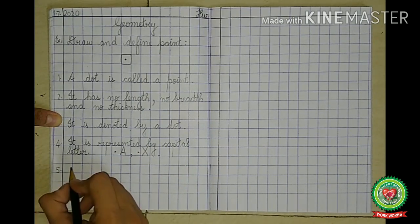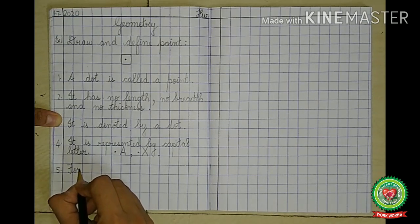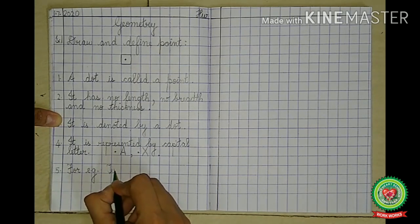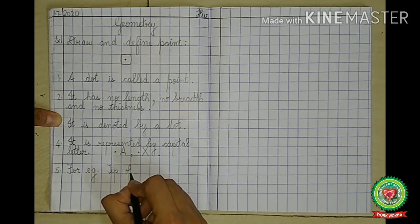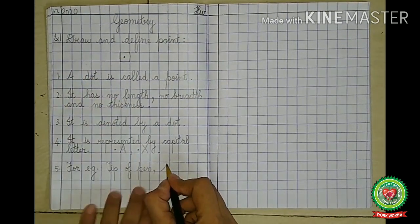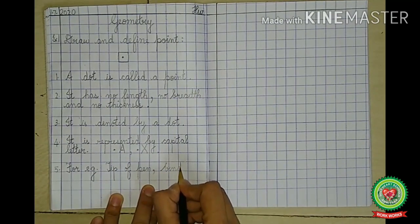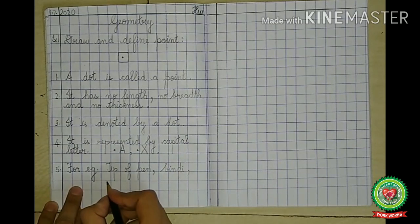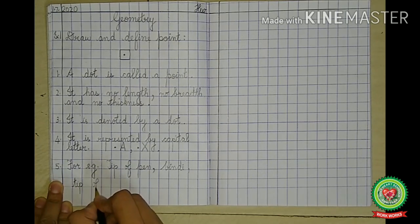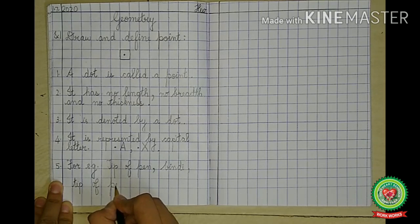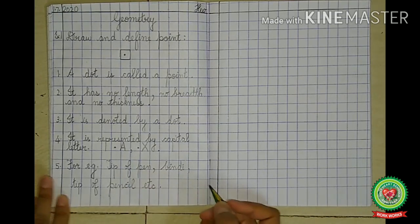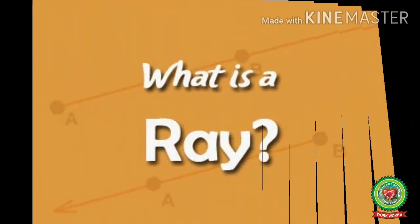Leave one line, put number 5. For example: tip of pen, bindi, tip of pencil, etc. So children, this was the copy approach of point.